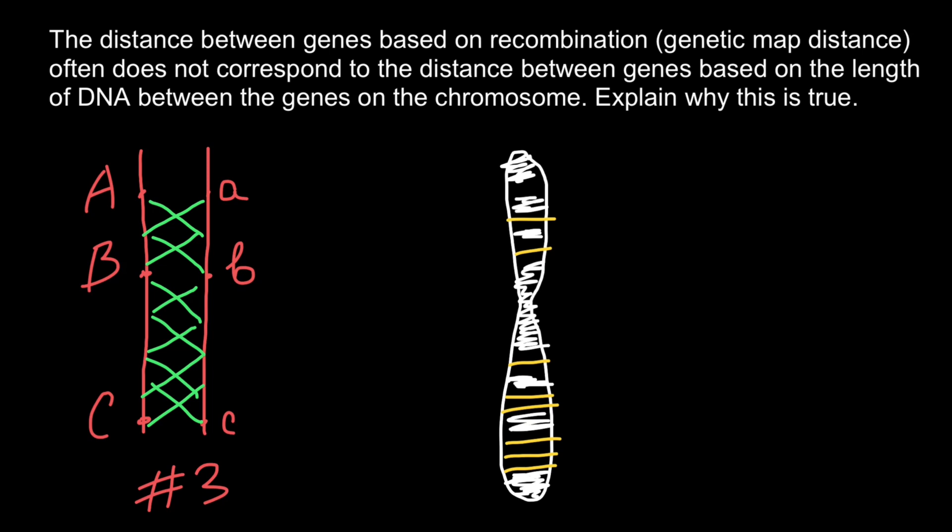For example, imagine that we will have a hot spot here. Crossing over in this hot spot would be tremendously bigger than in the adjacent areas. Here in this hot spot, we may have crossing over that is going to be tenfold greater than in the adjacent region.